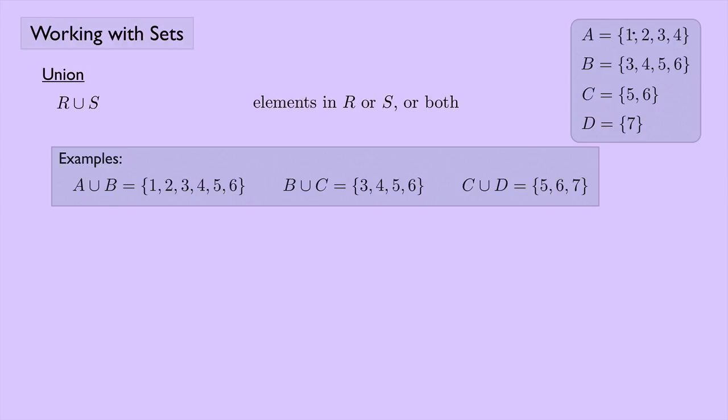In this case one, two, three, and four, that's in the union. Three and four we already have and then the five and six. So we get one, two, three, four, five, six. B union C, that's three, four, five, six. B is three, four, five, six. C just duplicates part of B so we don't need to write it twice. C union D is five, six, seven.